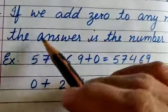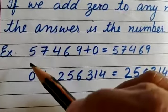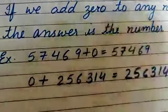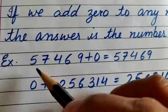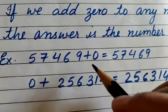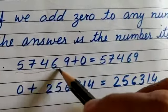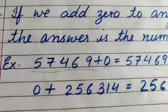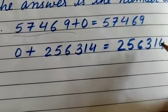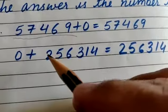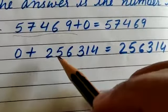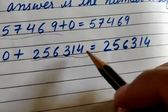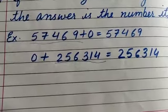Here is a number — if we add zero, the answer will be the number itself. Zero meh agar ham koi bhi number add kareenge, toh answer wahi number ayega — yehi number ayega. There is no change in number if we add zero. Clear?